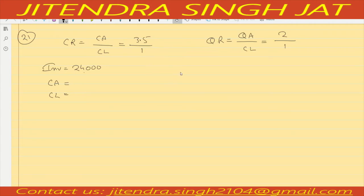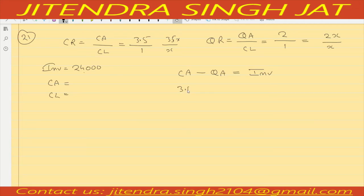We know current assets minus quick assets equals inventory. Assuming current liabilities as X, current assets become 3.5X and quick assets become 2X. So 3.5X minus 2X equals 1.5X equals inventory, which is given as 24,000.